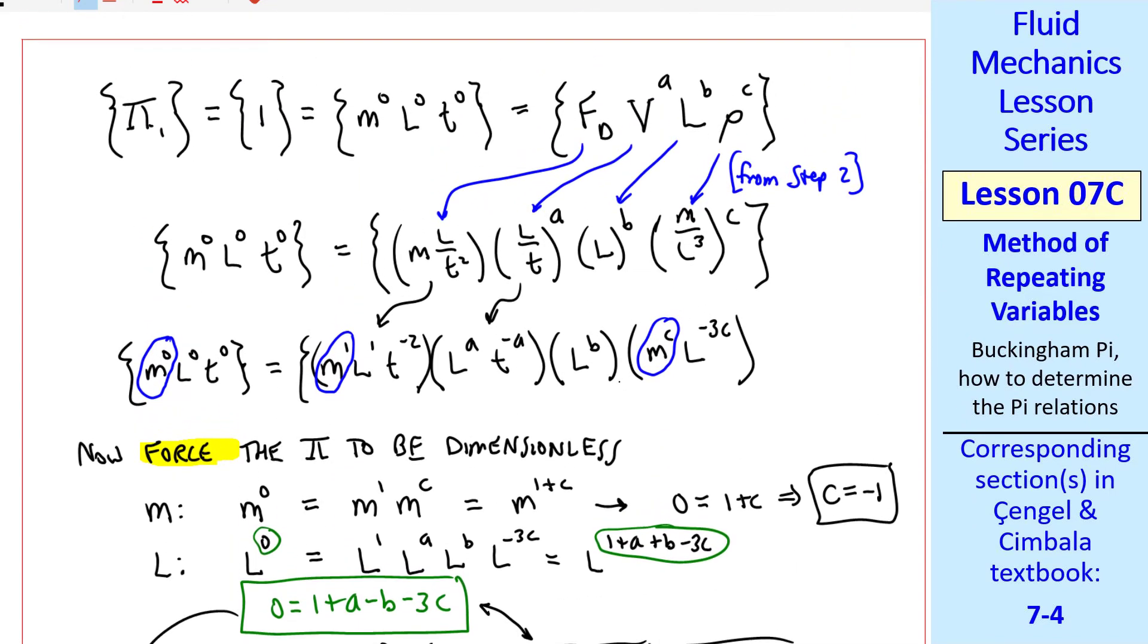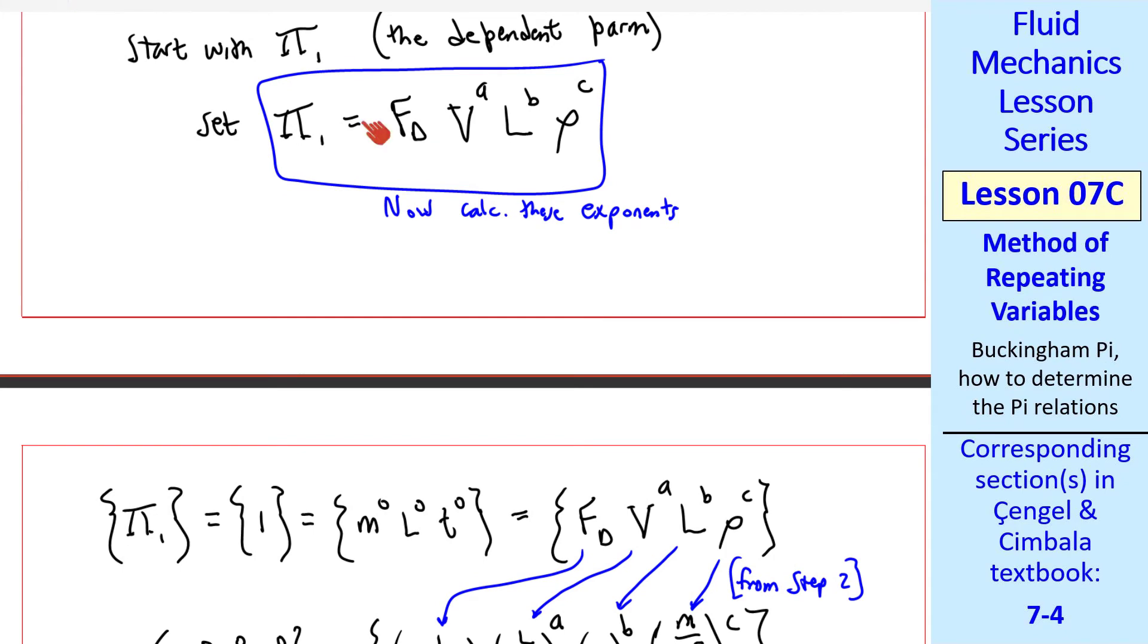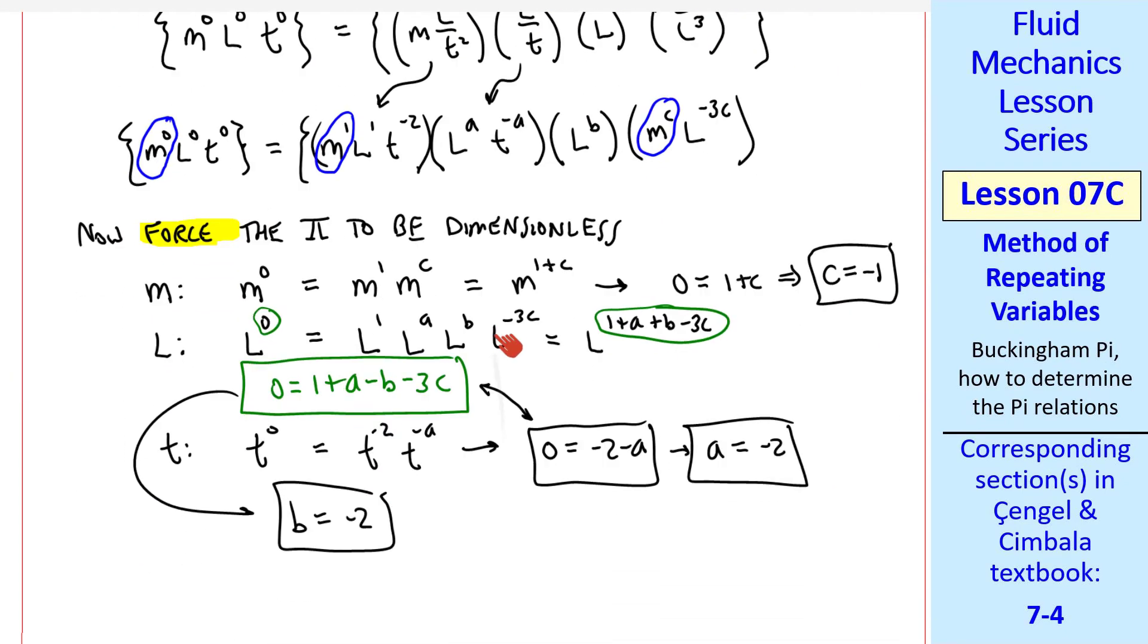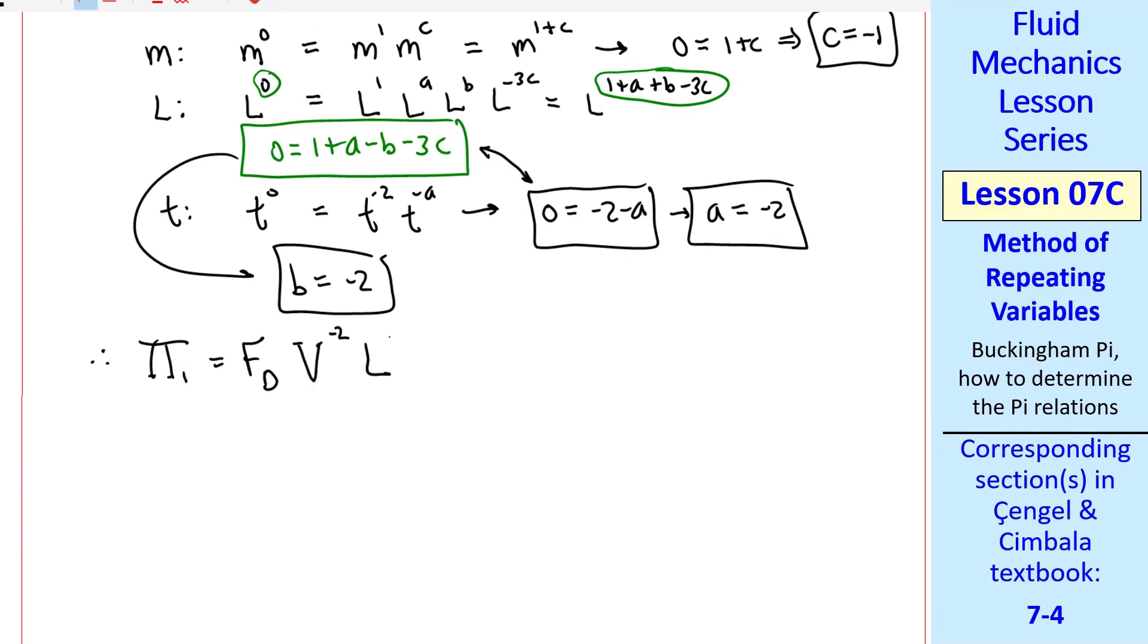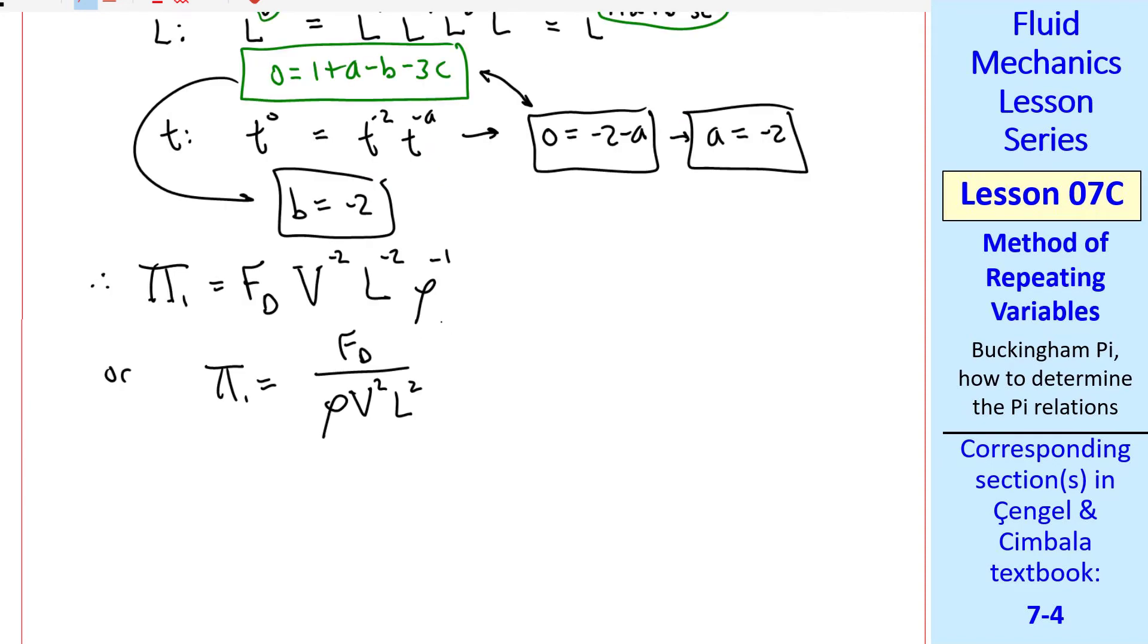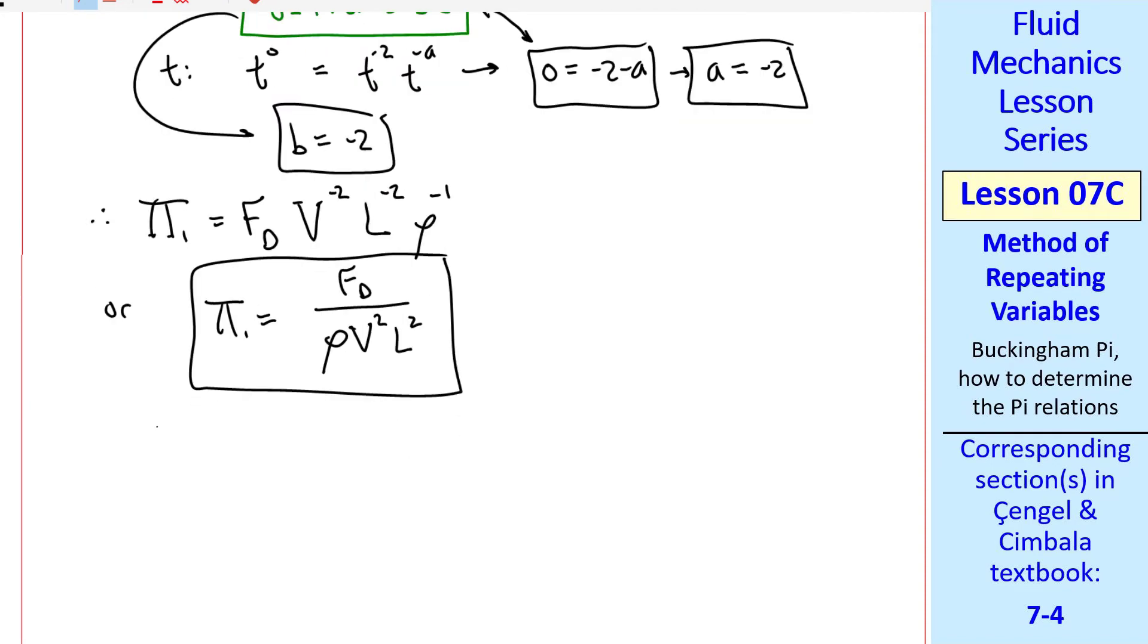So a equals negative two and b equals negative two. Now that we have these exponents, we go back to our pi and form our pi with these exponents: a, b, and c. So we write pi one equals fd, v to the negative two, l to the negative two, rho to the negative one. Or pi one equals fd over rho v squared l squared. We're still in step five. Now we manipulate as necessary.